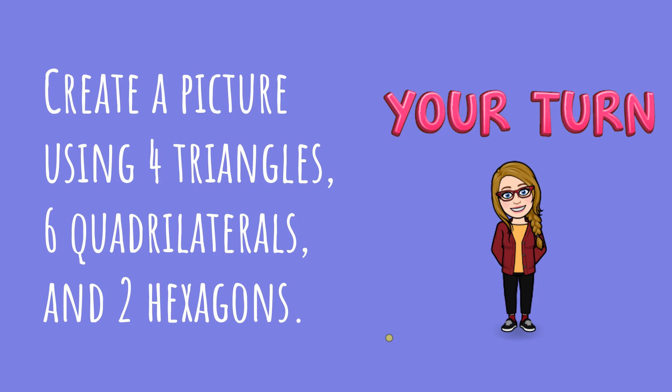Now it's your turn. Today's activity: you're going to create a picture using four triangles, six quadrilaterals, and two hexagons. Remember, a quadrilateral could be a square, a rectangle, a rhombus — it could even be a trapezoid. So remember, as long as it has four sides and four vertices, it's a quadrilateral. Create a picture — be creative, you can make any picture that you want, but it has to have four triangles, six quadrilaterals, and two hexagons.